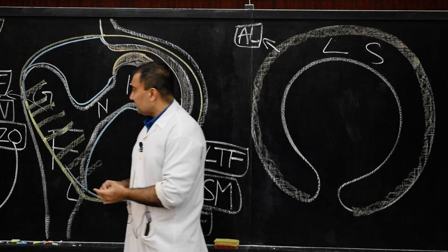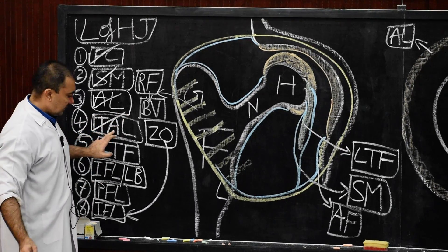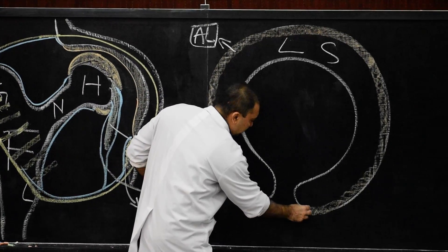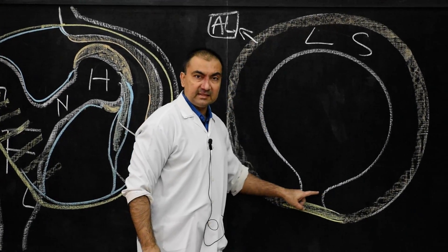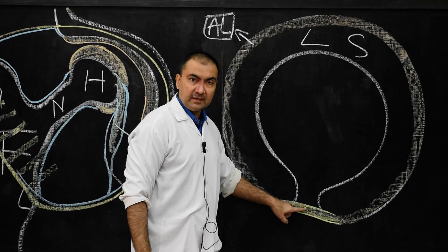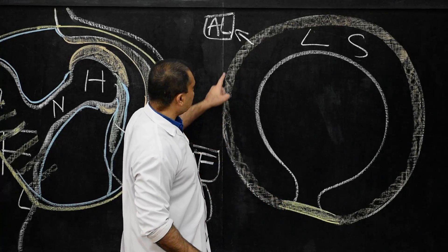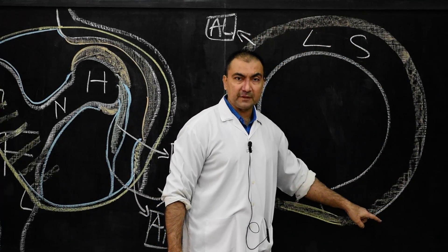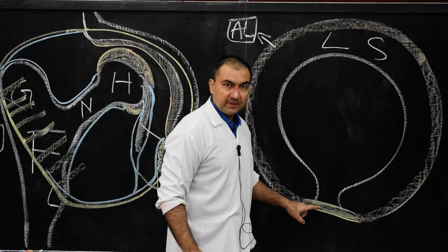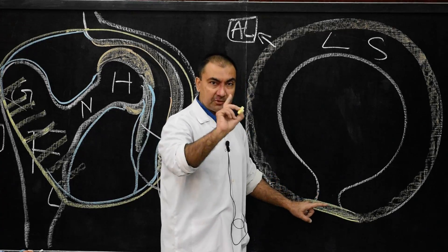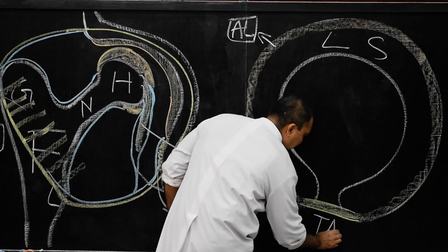Ligament number 4 is the transverse acetabular ligament, which covers the acetabular notch. This ligament is a continuation of the acetabular labrum across the acetabular notch, but unlike the acetabular labrum (which is fibrocartilage with abundant cartilage cells), the transverse acetabular ligament does not contain cartilage cells.